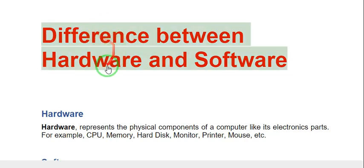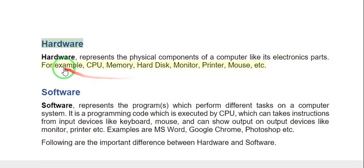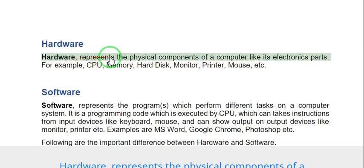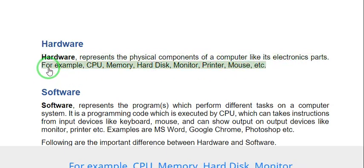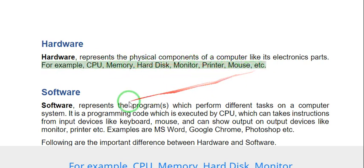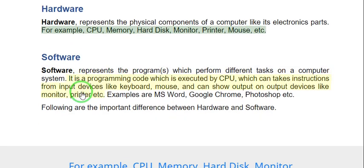Difference between hardware and software. Hardware represents the physical components of a computer, like its electronic parts. For example, CPU, memory, hard disk, monitor, printer, mouse, etc.